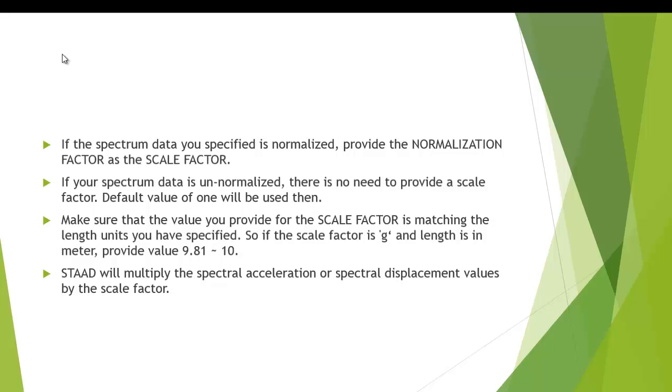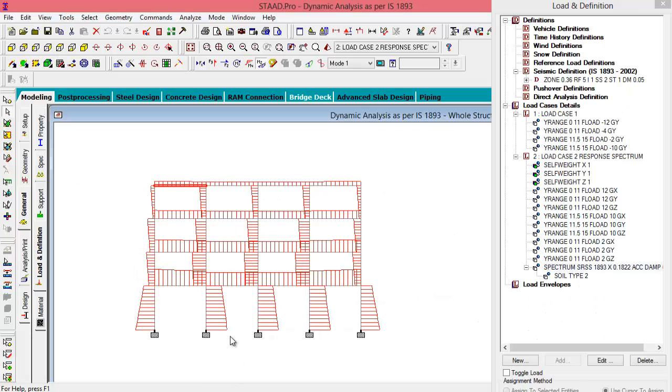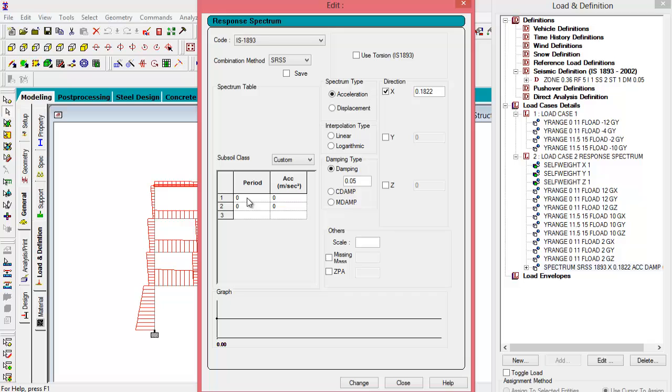If you are providing a scale factor, make sure that the scale factor that you are providing matches the length units that you have specified. Suppose the scale factor is G and the length that you are using is meter, you will have to provide a scale factor value of 9.81 or approximately 10. So what STAAD will do is that it will multiply the spectral acceleration value SA by G with this scale factor that you have provided. I will show you in our example. Suppose we had specified a custom spectrum table with custom values of periods and acceleration and currently the unit is meters, so we will have to specify a scale factor of 9.81 as a normalization factor to obtain the correct result.